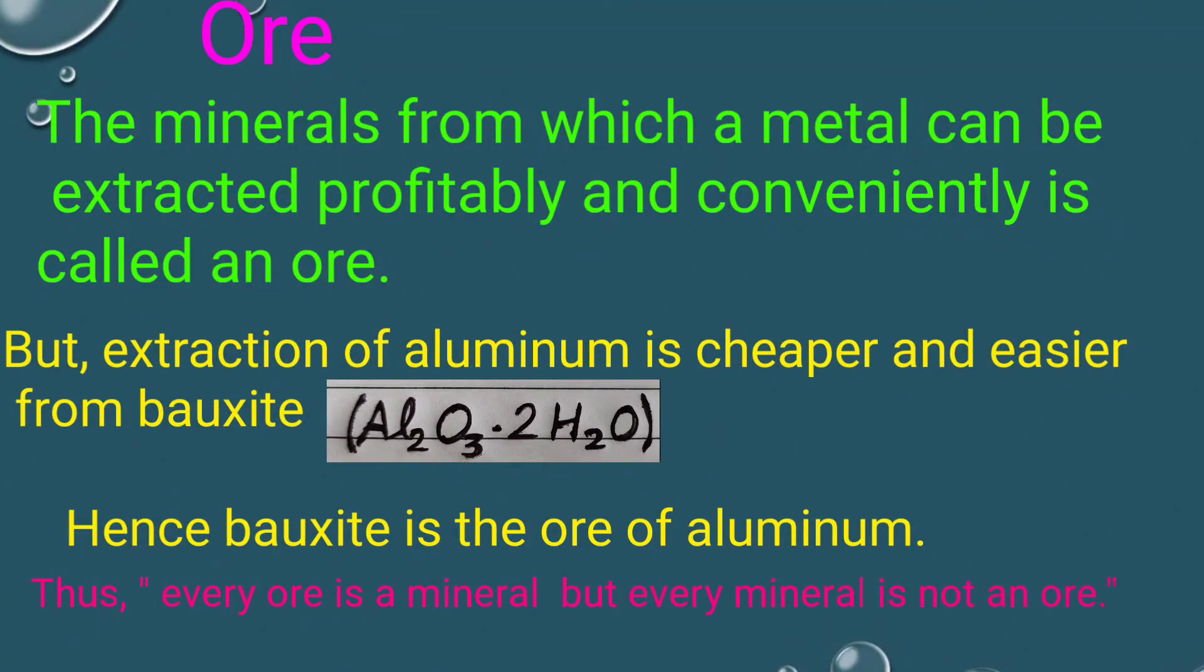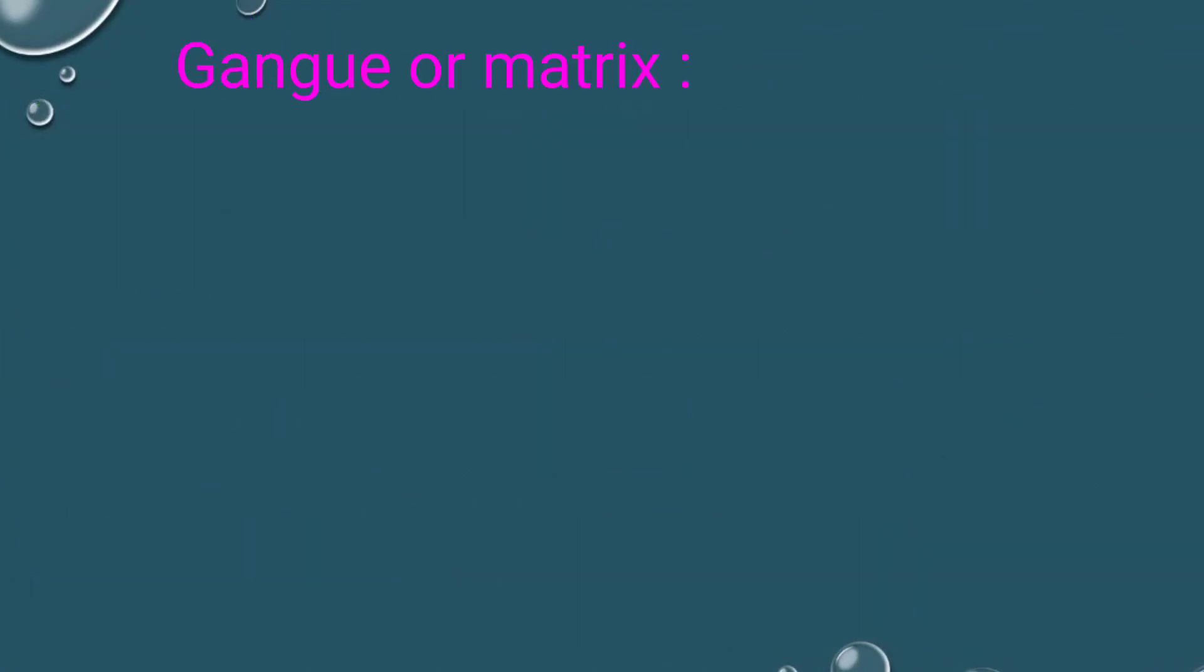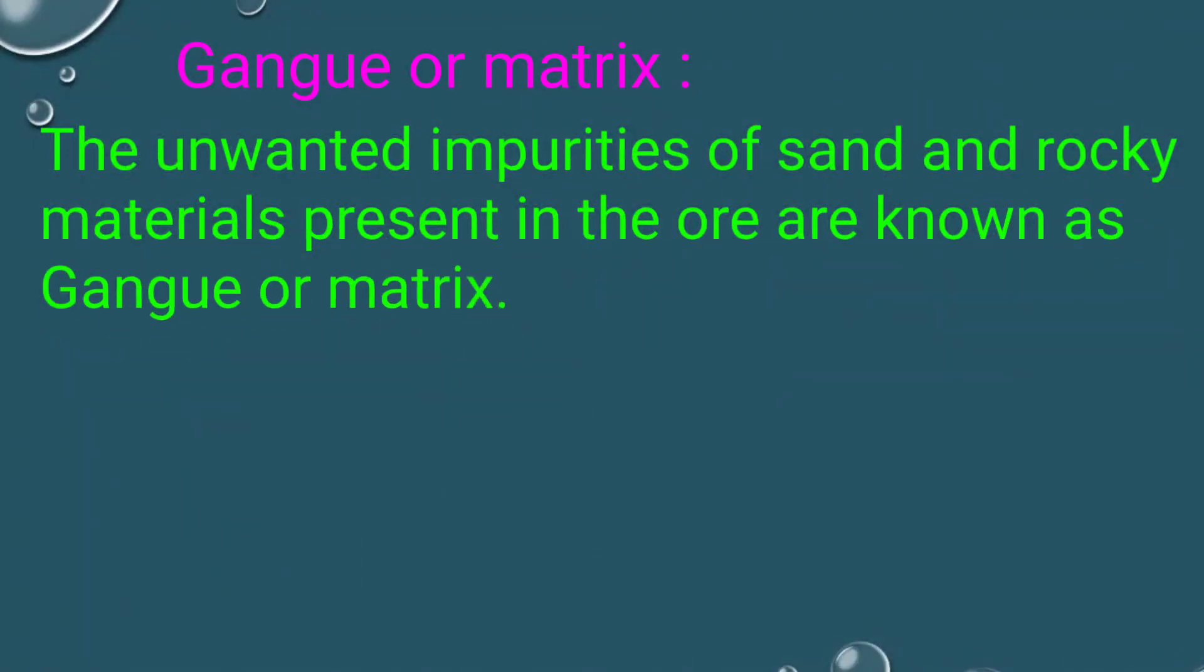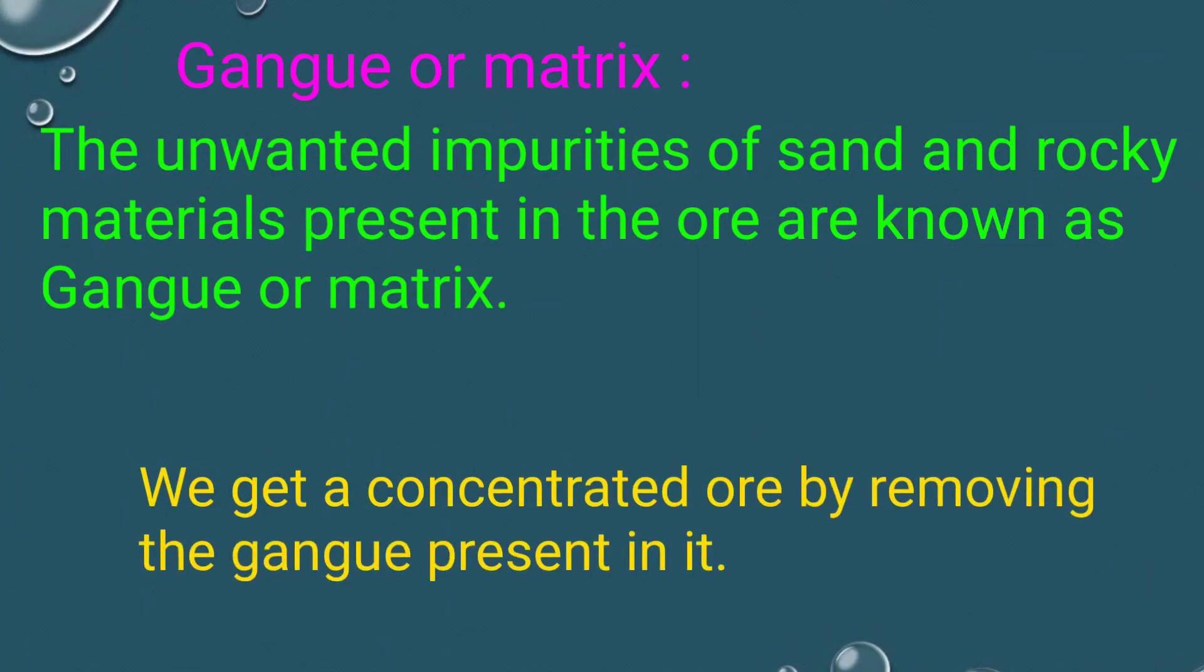Every ore is a mineral, but every mineral is not an ore. Gangue or matrix: the unwanted impurities of sand and rocky material present in the ore are known as gangue or matrix. We get a concentrated ore by removing the gangue present in it.